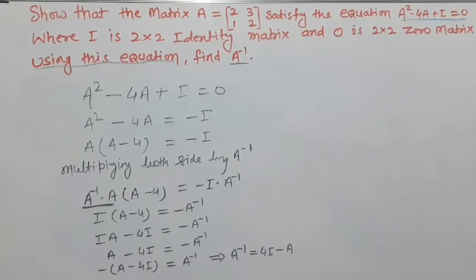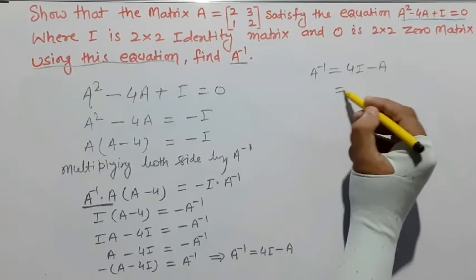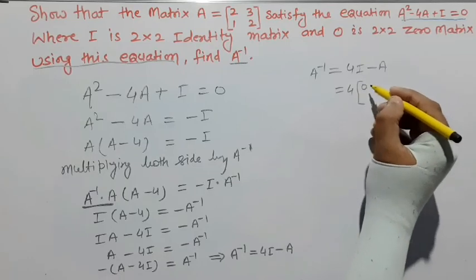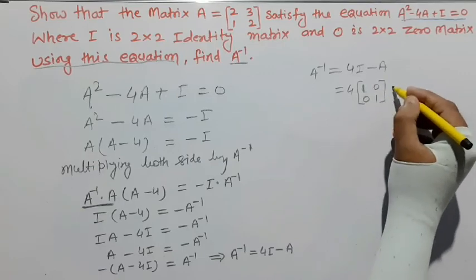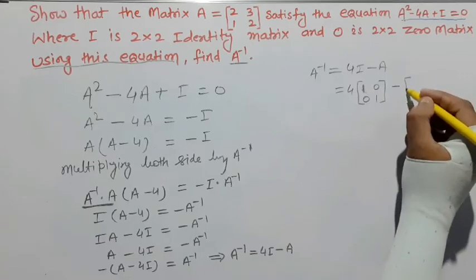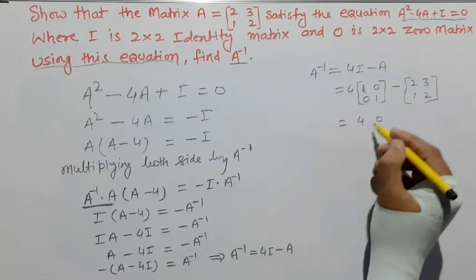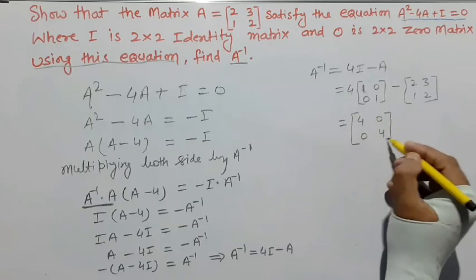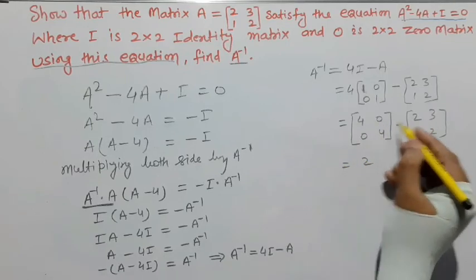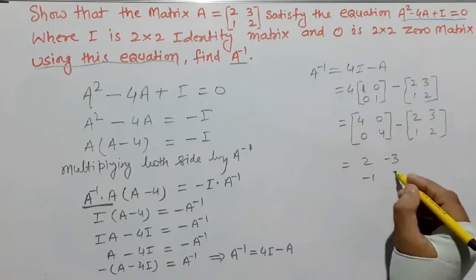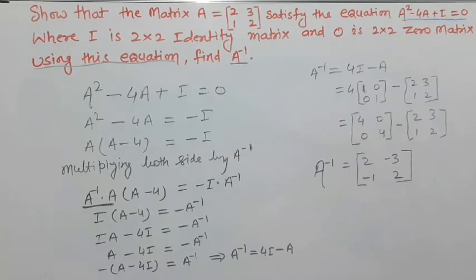A⁻¹ = 4I - A। 4I = 4×[[1,0],[0,1]] = [[4,0],[0,4]]। A = [[2,3],[1,2]]। Subtract करो: [[4-2, 0-3],[0-1, 4-2]] = [[2,-3],[-1,2]]। यह हो गया हमारा A inverse। यह question पूरा हो गया।